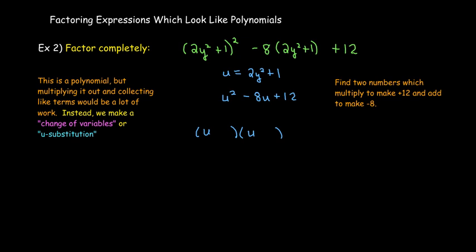Those two numbers would be what? Negative six and negative two, and so now I've got the u polynomial factored, but I want to always go back to the original variable, right?